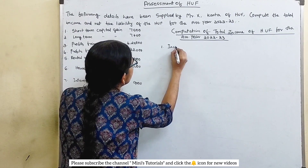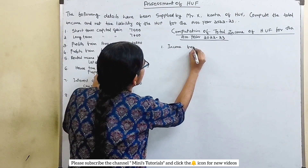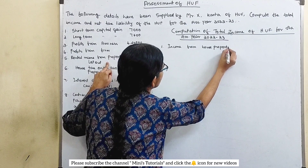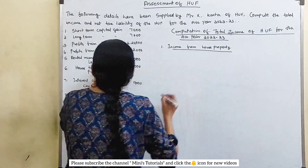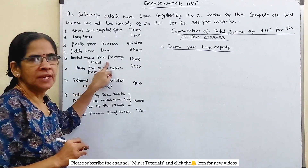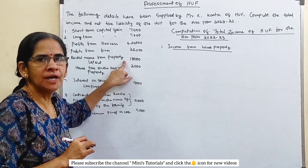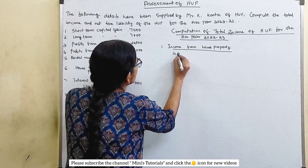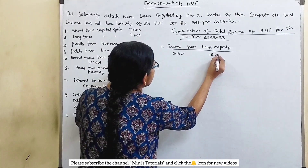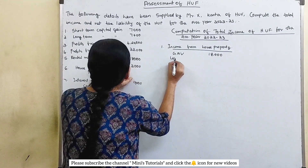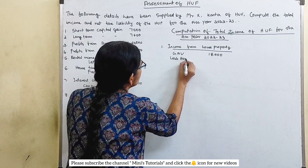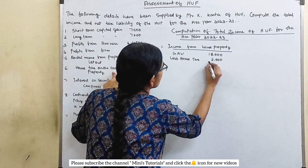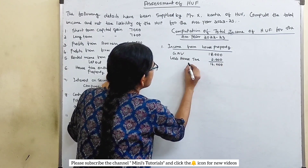Income from house property — I am going to compute this. Rental income from house property let out: the gross annual value is 18,000. Less house tax, that is 2,000. This equals 16,000. This is the annual value.